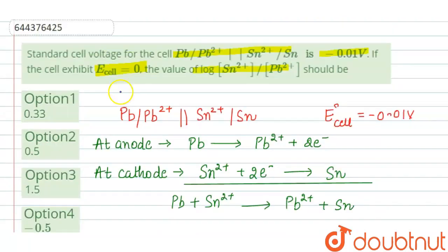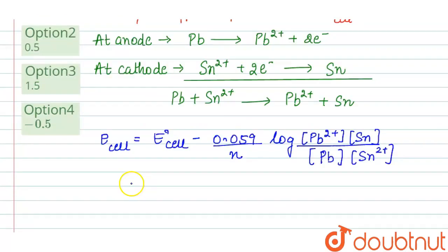E cell is given in the question as 0, and E° cell is minus 0.01 volts. So: 0 = -0.01 - (0.059/n) log([Pb2+]/[Sn2+]). n is the number of electrons involved in the reaction, which is 2. The concentrations of tin and lead are taken as 1 as they are solids.